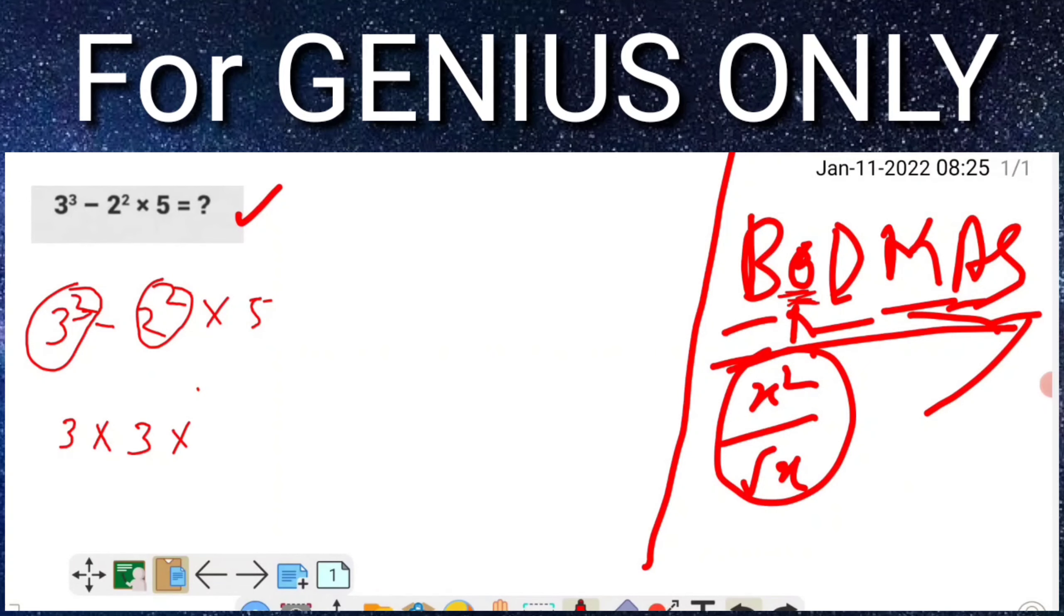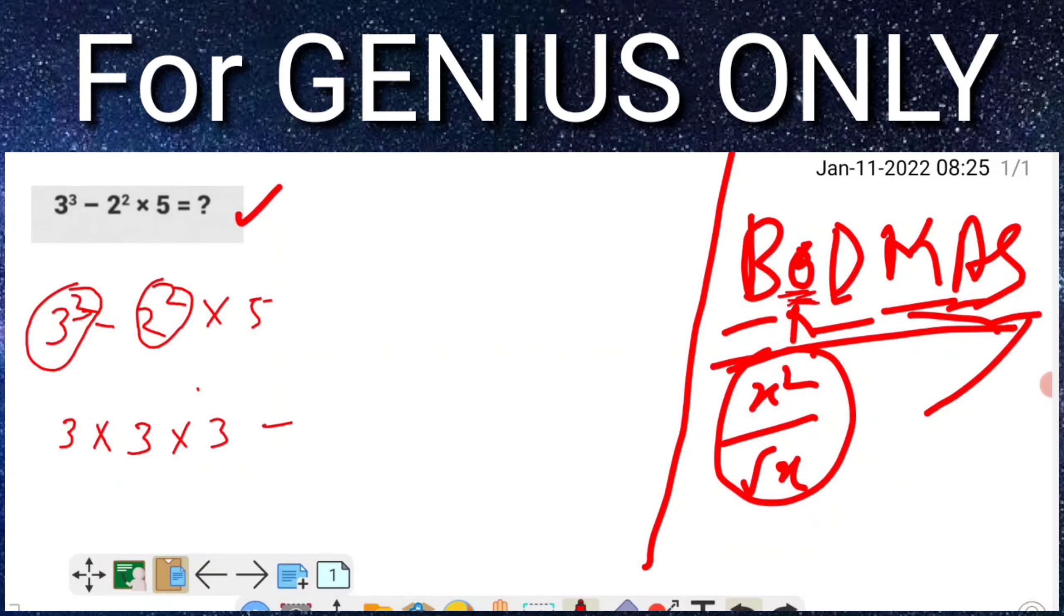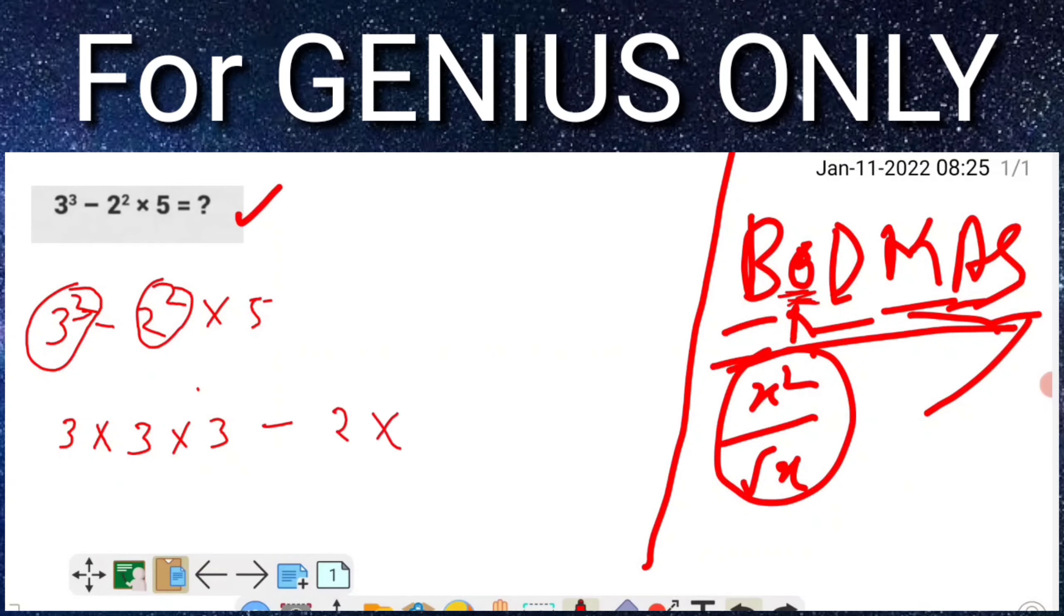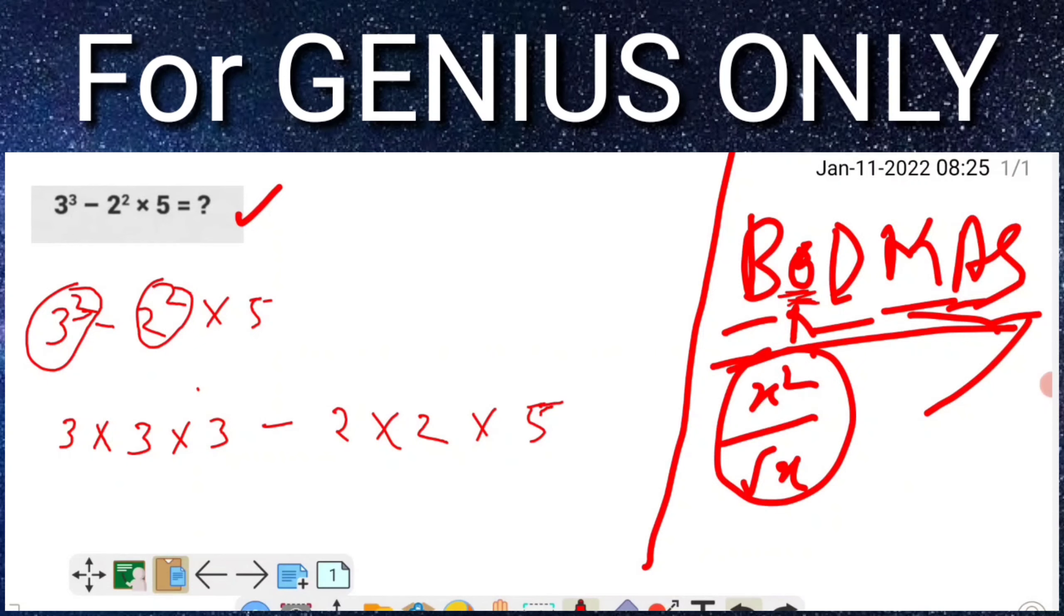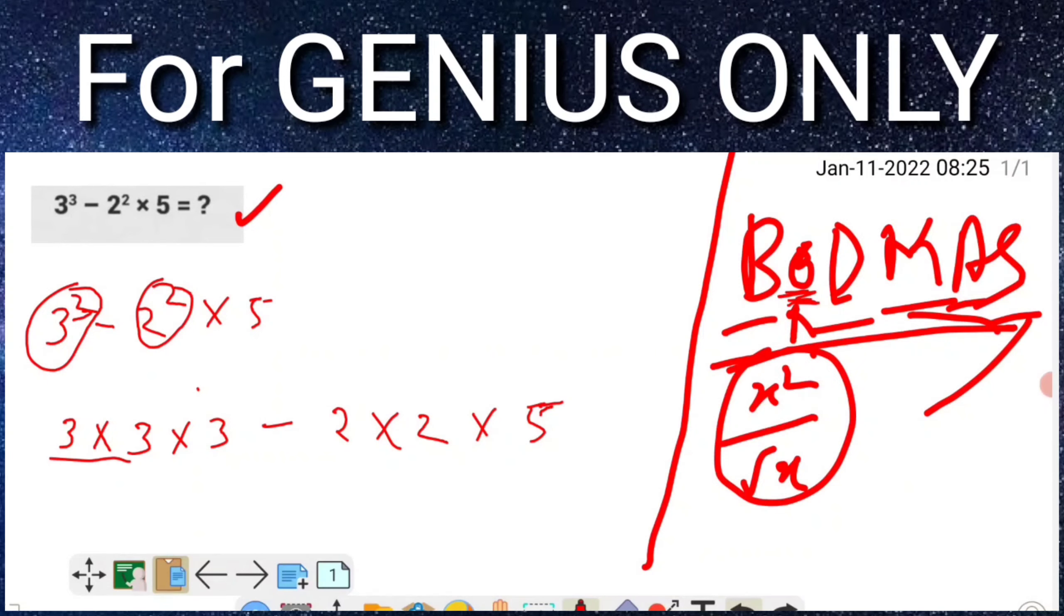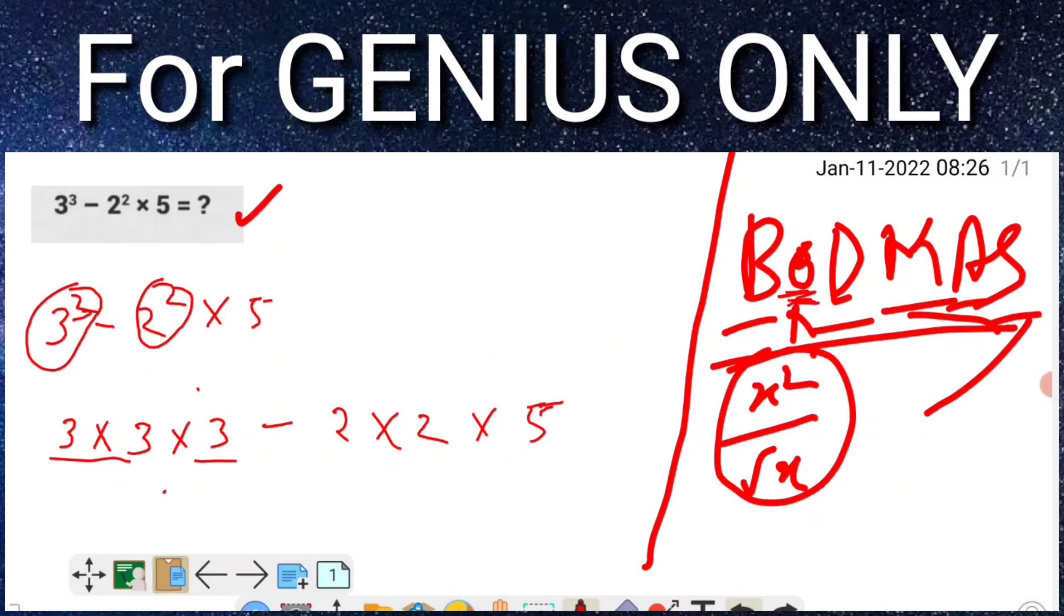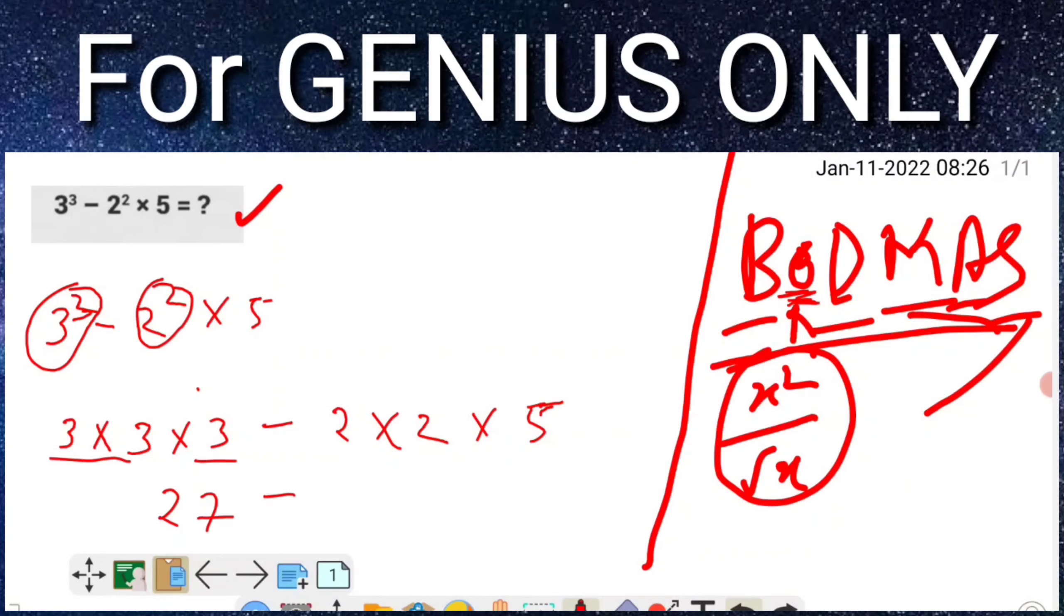3 cube means 3 times 3 times 3, minus 2 times 2, multiply 5. 3 times 3 is 9, and 9 times 3 is 27. And 2 times 2 is 4.